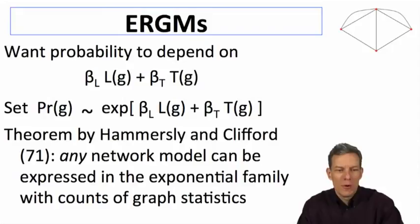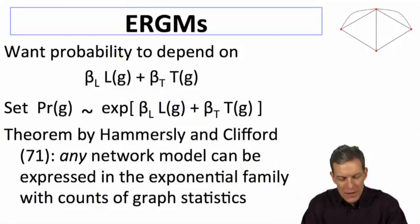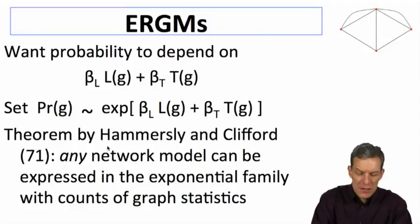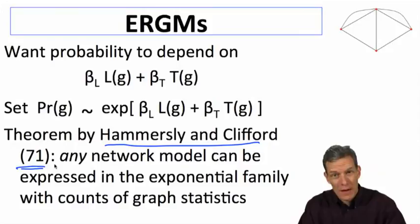There's actually a very powerful theorem by Hammersley and Clifford, and part of the reason we had that Markov name before is that any network model - if you write down probability of a graph depends on some set of statistics or features of the graph - any network model that you write down can be expressed in the exponential family where it counts statistics on the graph. This is in an unpublished paper by Hammersley and Clifford 1971. It's actually a tough theorem to state and difficult to prove, but the idea is that this is a fairly rich and flexible representation that can capture a lot of things.